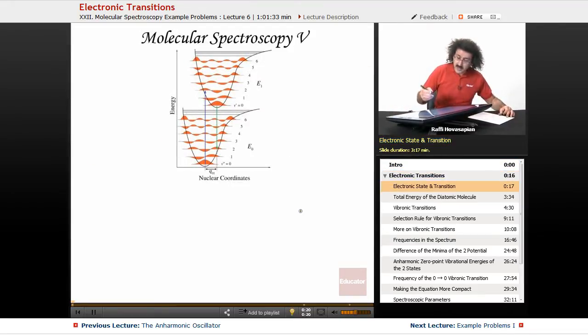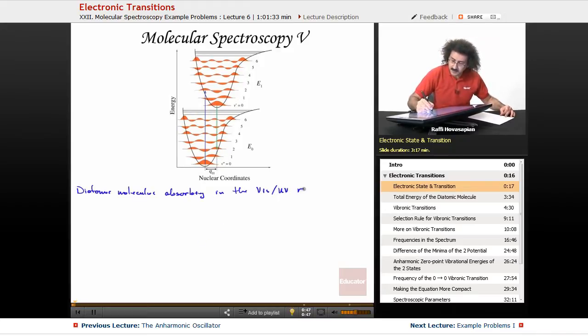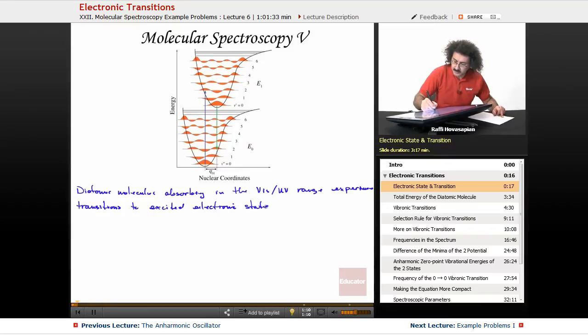Okay, now diatomic molecules absorbing radiation in the visible ultraviolet range, they experience transitions to excited electronic states. Okay, so we call these electronic transitions. It's where we send the electron actually up to a higher level of energy.